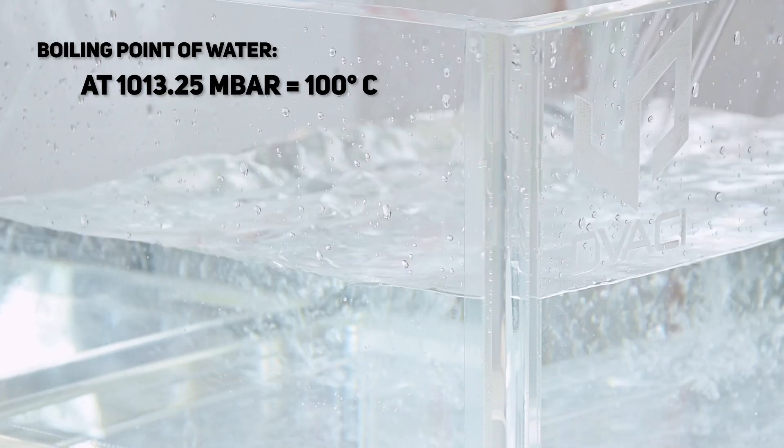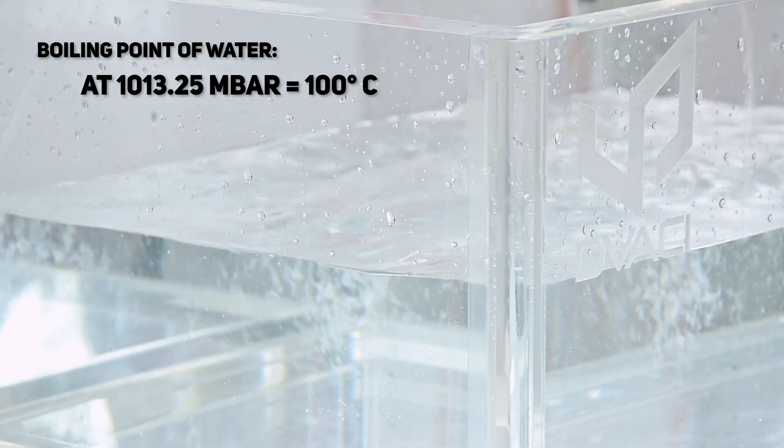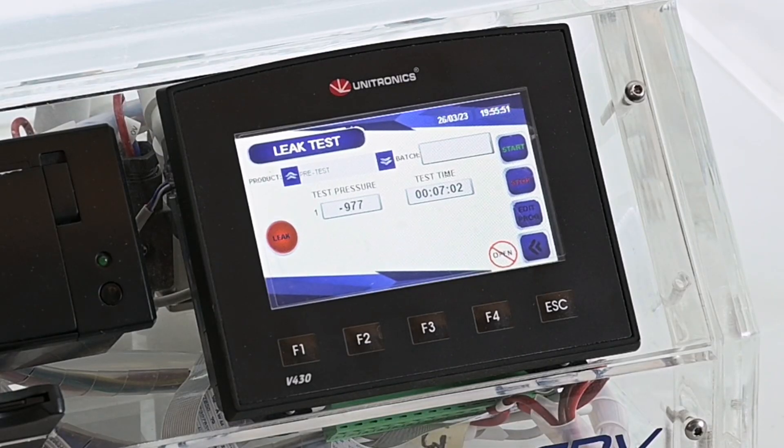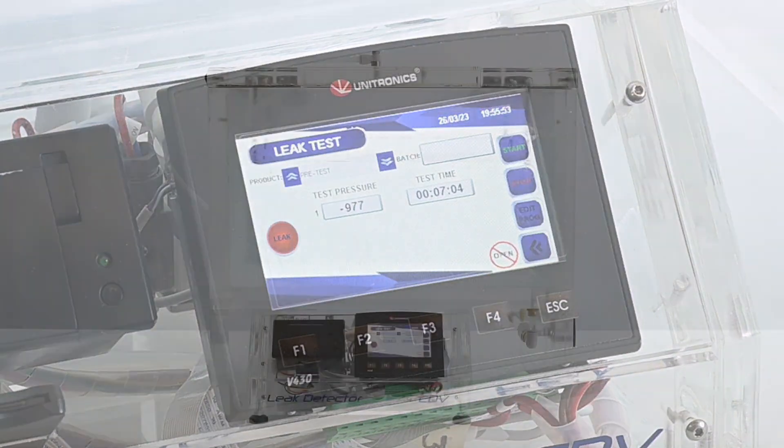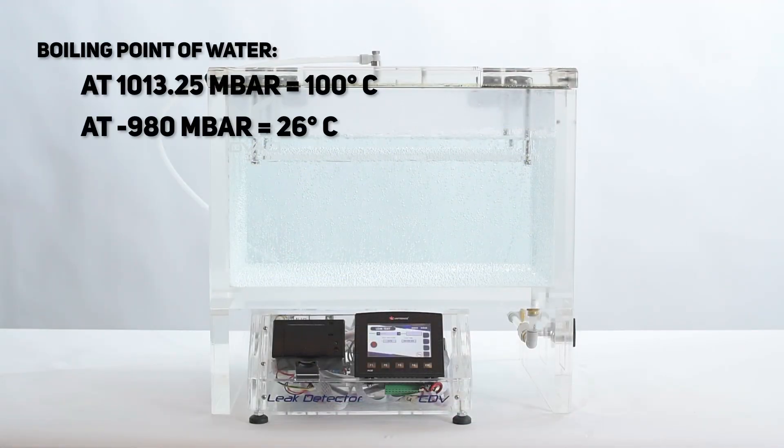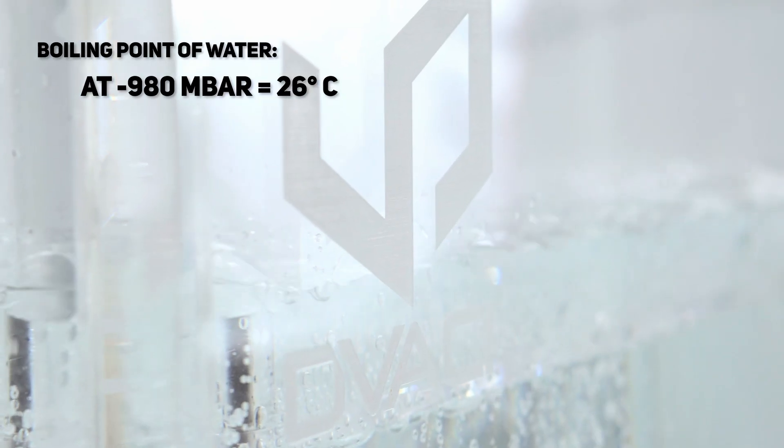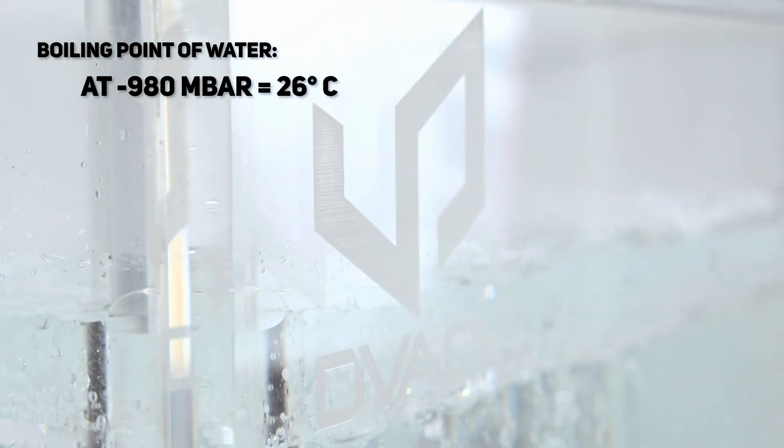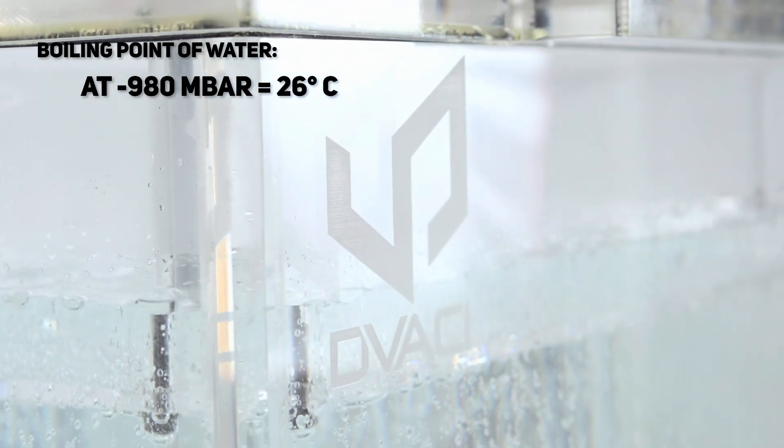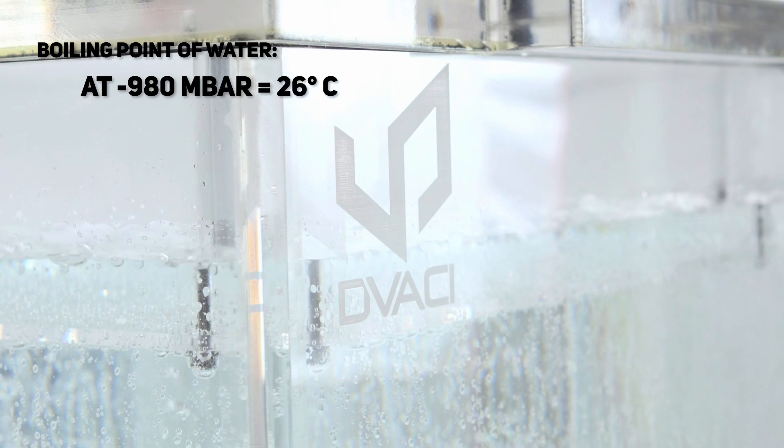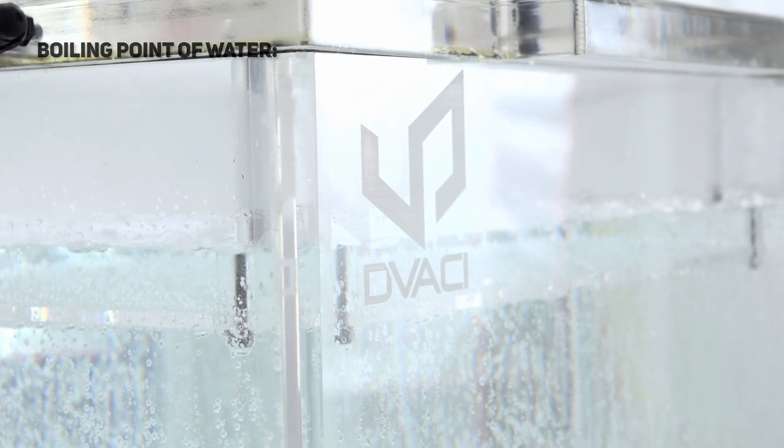Did you know that normal water evaporates at 100 degrees Celsius at sea level, but under minus 980 millibar of vacuum, the boiling point is reduced to about 26 degrees Celsius. At this point, at room temperature, air bubbles will appear, making it difficult to spot a leak during any submersion test.